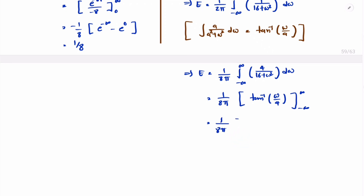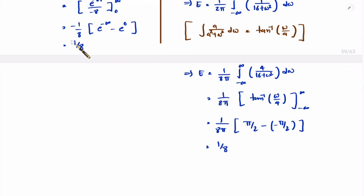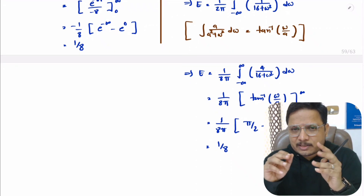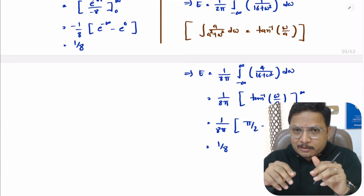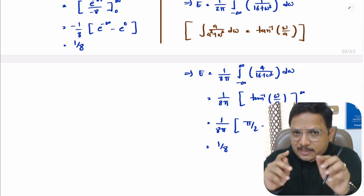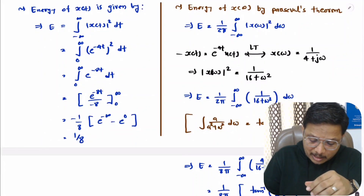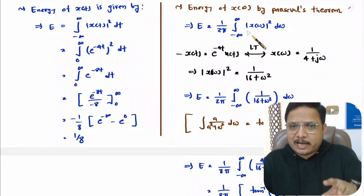Substituting the limits: tan⁻¹(∞) minus tan⁻¹(−∞) = π/2 − (−π/2) = π. So we have (1/8π) × π, and the π cancels, giving energy = 1/8. By normal calculation energy is 1/8, and by Parseval's theorem energy is also 1/8. This is how we can identify energy — if you have a complex signal and can solve using Laplace transform, one should use Parseval's theorem. Otherwise normal calculation is sufficient, but here I have shown dual verification.